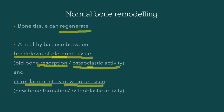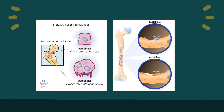Whereas the replacement by new bone tissue — the formation of new bone tissue — is performed by osteoblastic cells, also called osteoblastic activity. So inside the bone there are different types of cells, mainly the osteoblast and osteoclast. The osteoblast helps form new bone tissue, whereas the osteoclast helps break down old bone tissue. The breakdown of bone tissue by osteoclast is called bone resorption, and the formation of new bone tissue is performed by osteoblast.